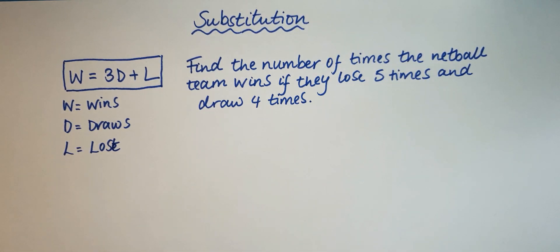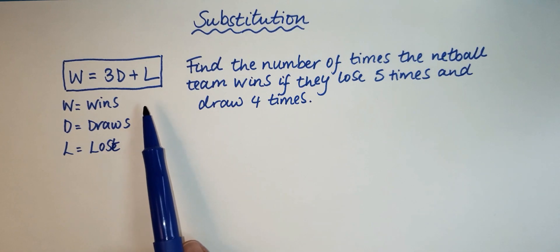So the question is find the number of times the netball team wins if they lose five times and draw four times. So there's quite a few words there, there's an equation, there's a formula, there's lots going on here, but actually it's very simple if we can condense this information into a few words. The first thing we need to do is understand what the formula is saying to us.